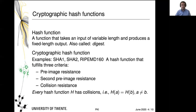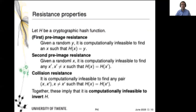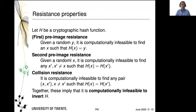Every hash function has collisions due to the fixed-length output, and cryptographic hash functions are no different. There will always be values a and b where h(a) equals h(b) without a and b being the same. There are three criteria that we believe to be fulfilled that make cryptographic hash functions so useful: pre-image resistance, sometimes called first pre-image resistance; second pre-image resistance; and collision resistance.